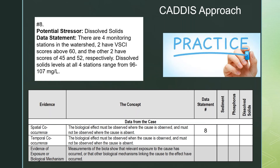Your first step is trying to decide on those data statements. Here's a little cheat: the first answer for spatial co-occurrence is data statement eight. The data statement says there are four monitoring stations within the watershed — two have VISCI scores above 60, the other two have scores of 45 and 52. Dissolved solids levels at all four stations range from 96 to 107 milligrams per liter. So what we're doing in this data statement is really a spatial analysis — we've got four stations, two with good benthic scores, two with poor benthic scores. And the dissolved solids don't vary much between the four stations.